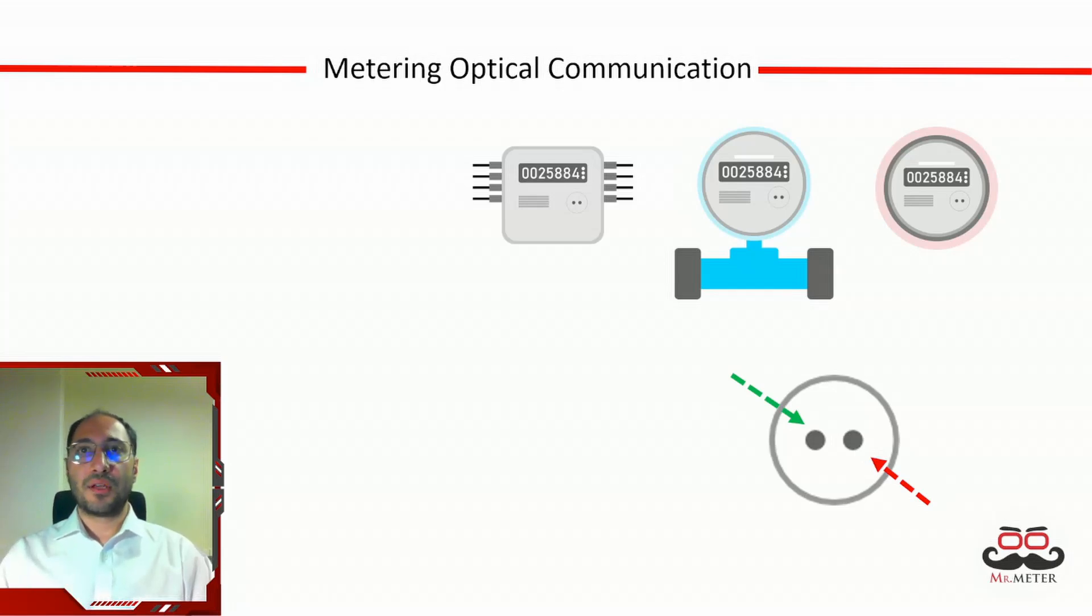This standard ensures interoperability and uniformity among various energy meter manufacturers, allowing for a wide range of data to be transmitted securely and reliably. In summary, the two LEDs in the optical ports of electricity meters or other types of meters are crucial for the bi-directional communication required for data transfer, configuration, and maintenance of the metering devices.